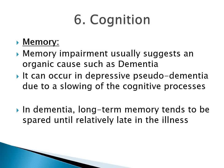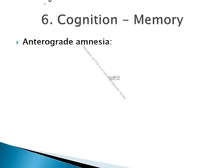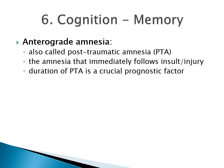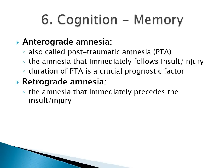Depressive pseudodementia improves once the depression is treated. In dementia, long-term memory tends to be spared until relatively late in the illness, so the initial difficulty would be an inability to learn new information. Anterograde amnesia, also called post-traumatic amnesia, is the amnesia that immediately follows an injury — the duration is an important prognostic factor, with longer duration indicating poorer prognosis. Retrograde amnesia is the amnesia for the period that immediately precedes the insult or injury.